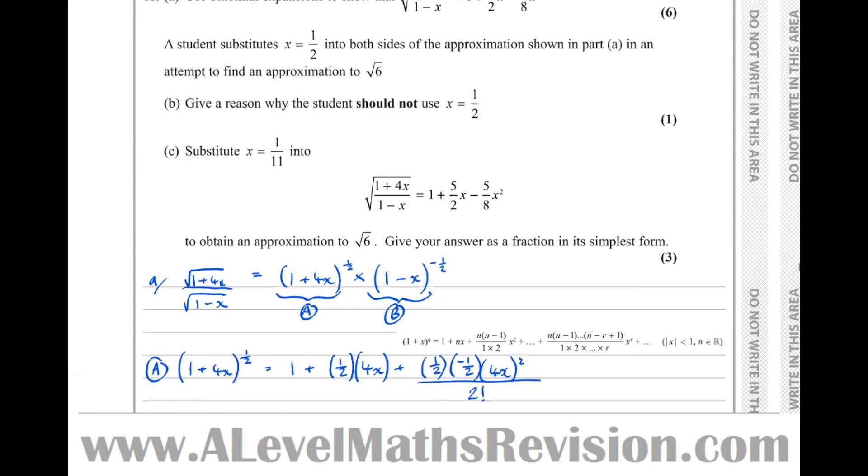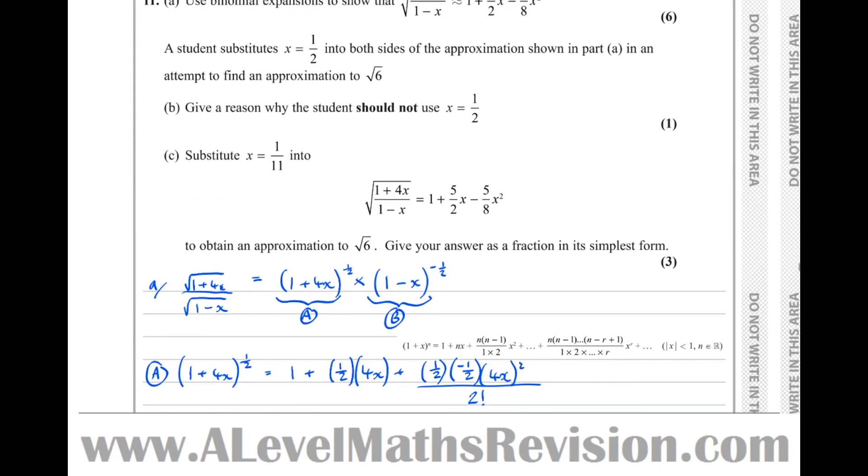So now looking to the next part of the question, it says part B, give a reason why the student should not use x equals 1 half. Now the key to this is to look at the domain of validity for each of these two binomial expansions.